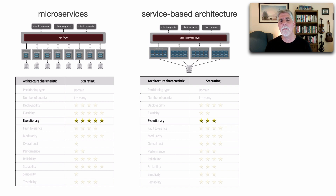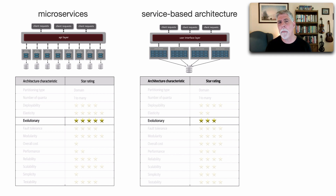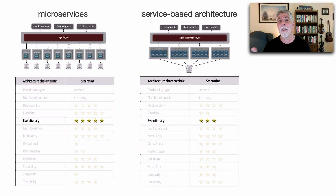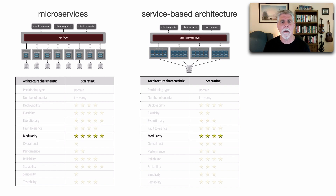The next difference is the evolutionary aspect. With microservices, evolving the architecture is often a matter of simply adding more separately deployed services, whether containerized or in serverless functions. However, with service-based architecture, because the entire domain is within a single deployment unit, it becomes more difficult to expand or evolve the architecture — although it's much better than a monolith. Modularity also loses a star within service-based architecture because of that coarse-grained nature, though it still has a level of architectural modularity, just not at the function level.